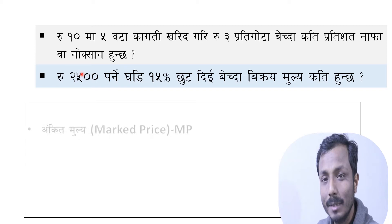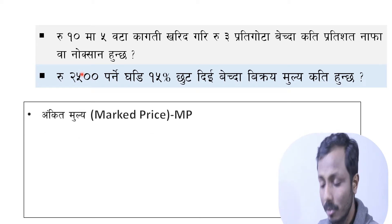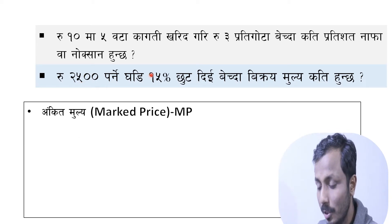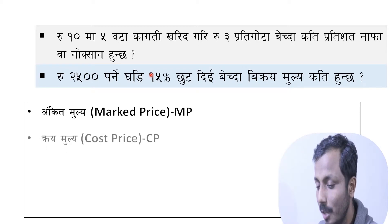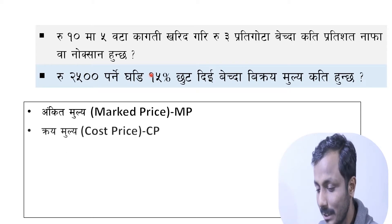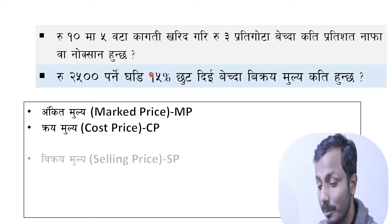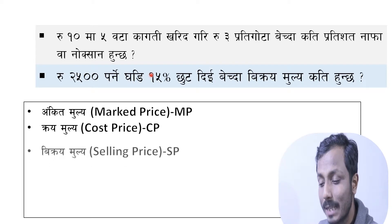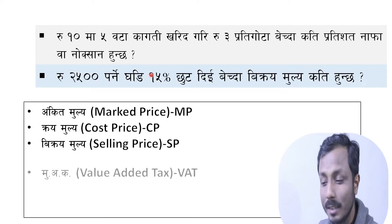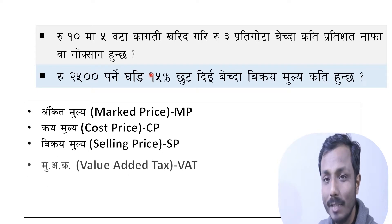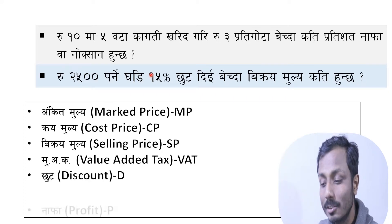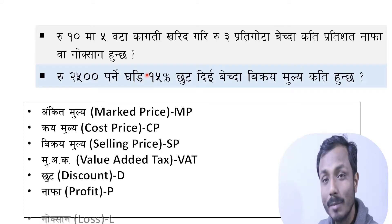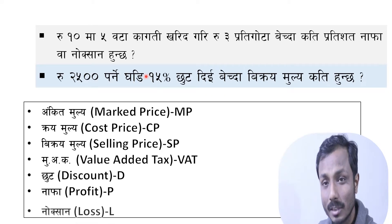In this chapter, I will find the key points of the question: Mark Price (MP), Cost Price (CP), Selling Price (SP), Value-Added Tax, Discount (D), Profit (P), and Loss (L).